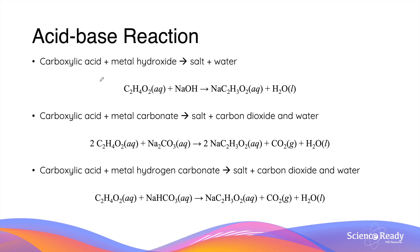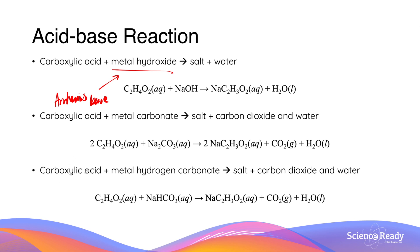Since carboxylic acids are weak organic acids, they can undergo acid-base reactions. Here is a recap of the important acid-base reactions. First, carboxylic acid reacting with a metal hydroxide produces a salt and water, because the metal hydroxide is classified as an Arrhenius base. For example, ethanoic acid reacts with sodium hydroxide to give sodium acetate and water. The second reaction is between a carboxylic acid and a metal carbonate, which produces a salt, carbon dioxide, and water. The third reaction is between a carboxylic acid and a metal hydrogen carbonate, which produces the same products — salt, carbon dioxide, and water. The only difference between these last two reactions is the stoichiometric ratio.